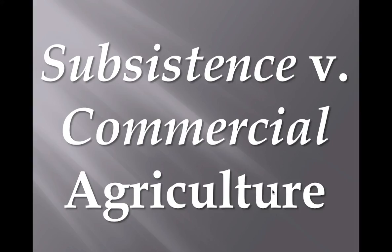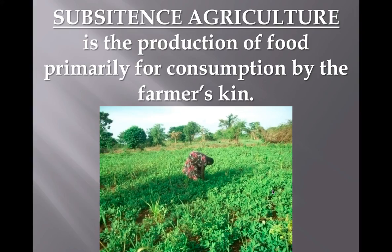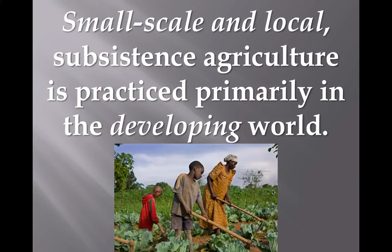Subsistence versus commercial agriculture is going to be very critical to the agriculture unit — we need to know this inside and out. Subsistence agriculture is simply people producing food for their family — growing it, eating it, for their local or extended family. A good generalization: these are small scale, more local, and found in the developing world. You won't see much of this in the United States or Canada — think more Africa, Southeast Asia, South Asia, etc.